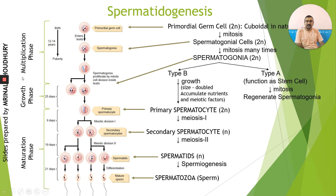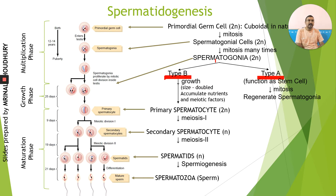The multiplication phase starts from birth itself. Certain primordial germ cells — precursor cells which will give rise to spermatogonia — enter the testis and produce spermatogonial cells or spermatogonia. These spermatogonia start dividing and give rise to two types of cells: type A spermatogonia and type B spermatogonia. Type A spermatogonia function as stem cells to maintain the pool of spermatogonia, since males continuously produce large numbers of sperms over a very long period of time.